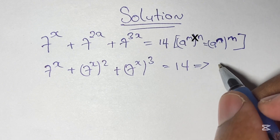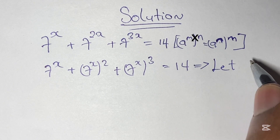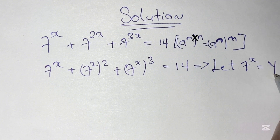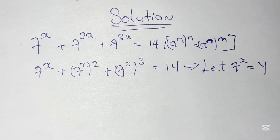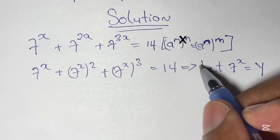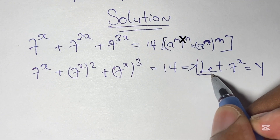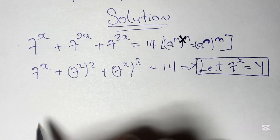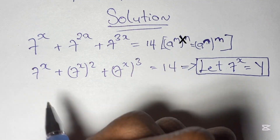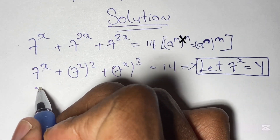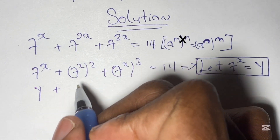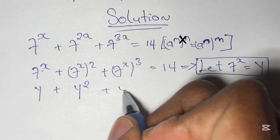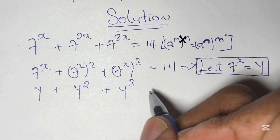From here we say let the value of 7 to the power of x become y. So we substitute 7 to the power of x for the variable y. Where we see 7 to the power of x, we represent that by y. So we say y, plus y squared, plus y cubed, is equal to 14.